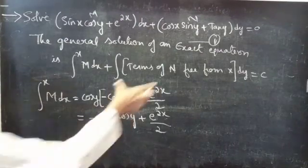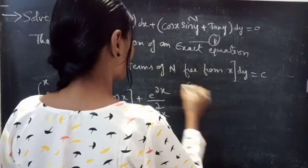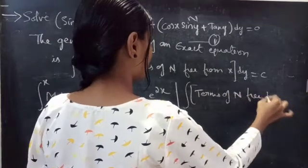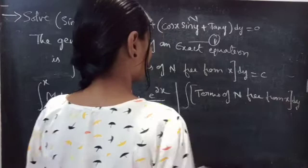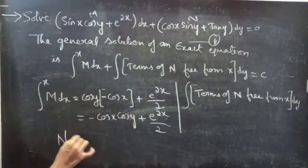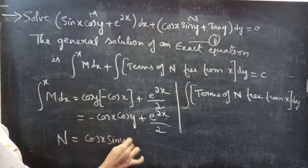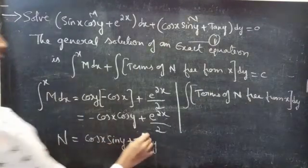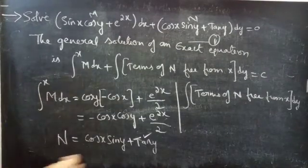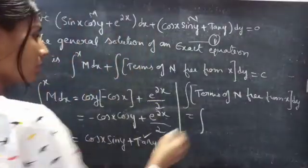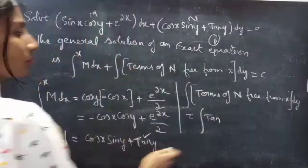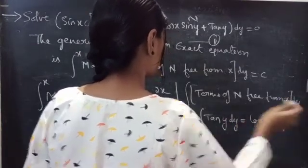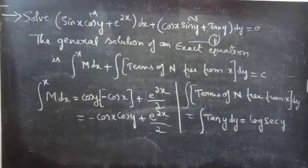Now consider the second integral: the integral of terms of N free from x, into dy. We have N equals cos x sin y plus tan y, so the term of N which is free from x is tan y. This equals the integral of tan y dy, and the integral of tan y is log sec y.